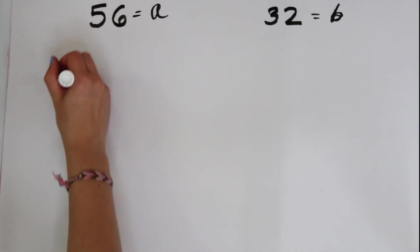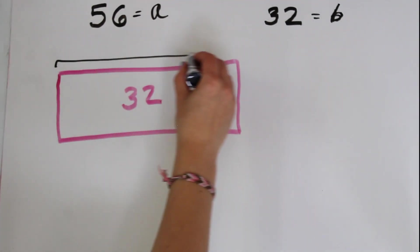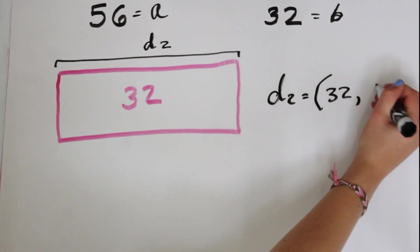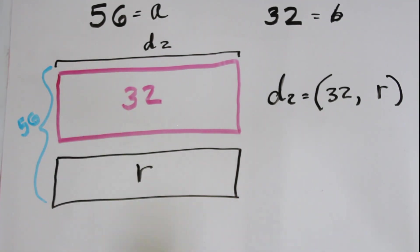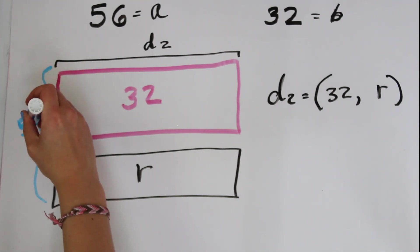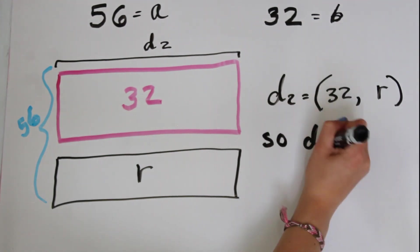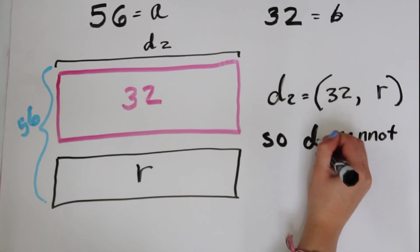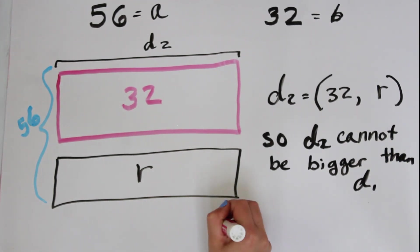Now, let's pretend that the greatest common divisor of B and R is bigger than D1. That means that 32 and R can both be split into D2 columns. But we know that 32 + R = 56, so 56 can also be split into D2 columns. Because D2 divides B and D2 divides A, D2 cannot be bigger than the greatest common divisor of A and B, by definition of greatest common divisor. So that means that D2 = D1.